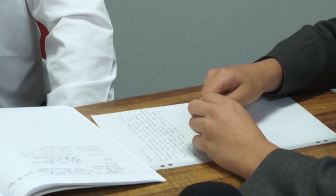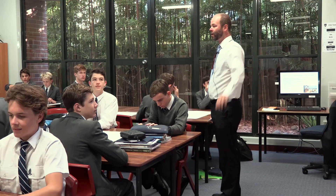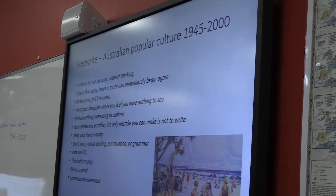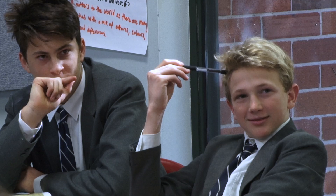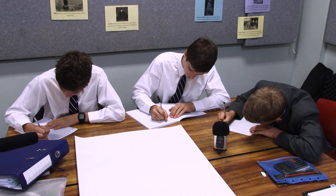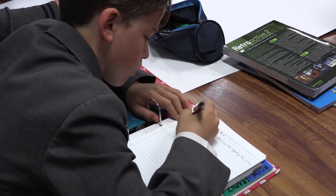We're going to jump back to five minutes of free writing, like we often do at the start of class. Here are the instructions. The topic is simply at the top: Australian popular culture, 1945 to 2000. Today we're going to organise the ideas we've been thinking about for the last four weeks — it's about synthesising. No discussion, please. Five minutes. Remember, you must keep your pen moving. You can't make mistakes.